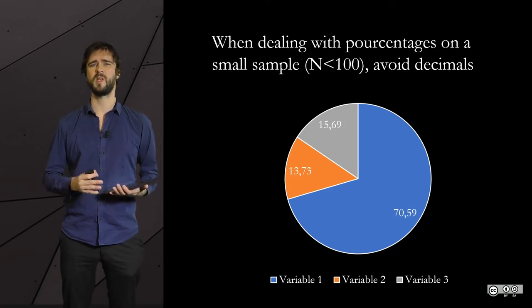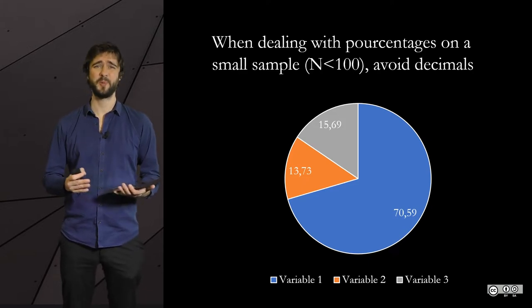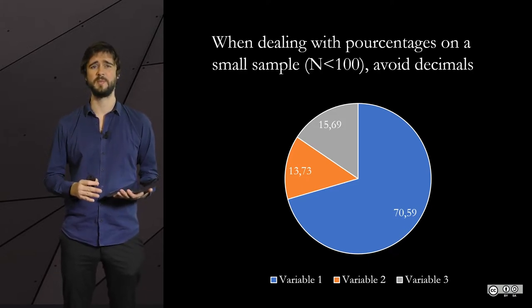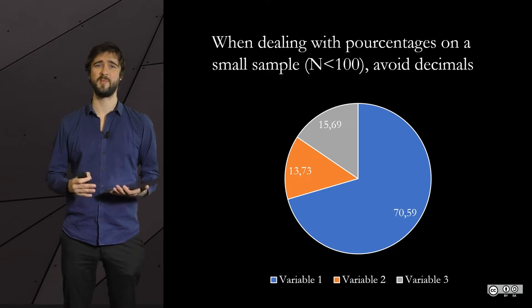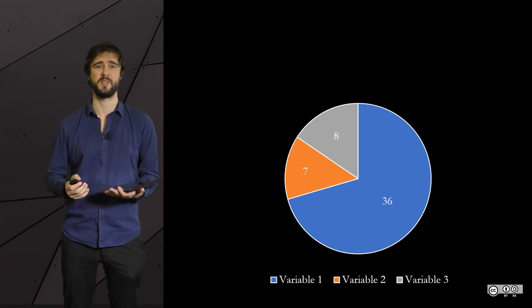And even then, sometimes it is still not really informative and simple percentages, like 70%, do the trick perfectly well. And when you have small samples, it is best to display raw numbers like 36, than to display 70.66%, for instance.